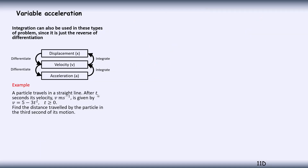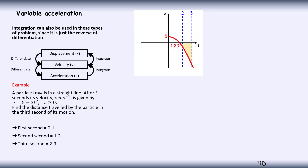In this example, we've got a particle travelling in a straight line. After t seconds, the velocity is given by 5 minus 3t squared, where t is greater than or equal to 0. The question wants us to find the distance travelled in the third second of motion. In the first second, it travels between 0 and 1 seconds. In the second second of motion, it travels between 1 and 2 seconds. And the third second of motion, which is what we're looking for, the particle is going to travel between 2 and 3 seconds. So we want to find displacement between second 2 and second 3. It would be helpful to sketch what the graph looks like of 5 minus 3t squared - it's a negative quadratic - and between 2 and 3 seconds we can see its displacement there.